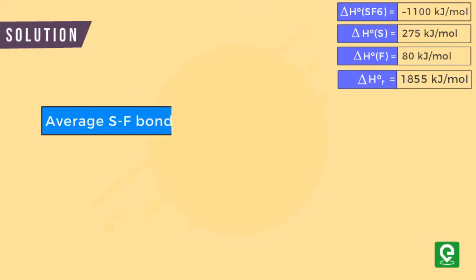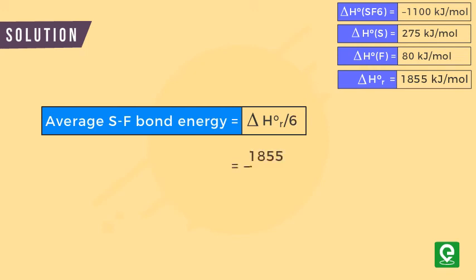This implies that the average S-F bond energy is equal to the heat of reaction divided by the number of S-F bonds present in the molecule, which is equal to 1855 divided by 6, that is 309.16 kilojoule per mole.